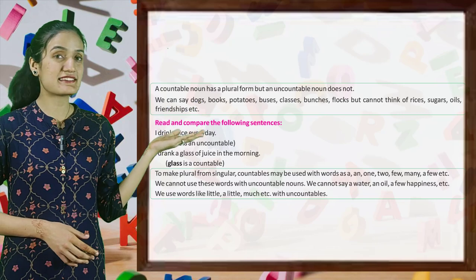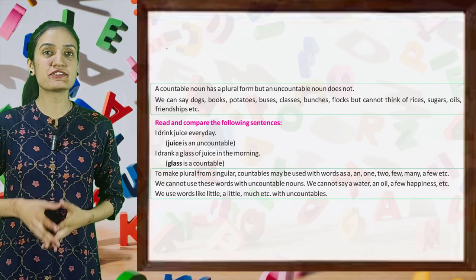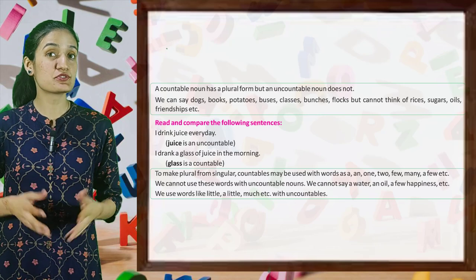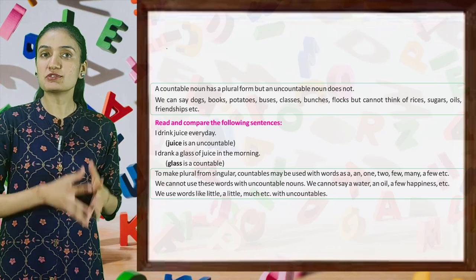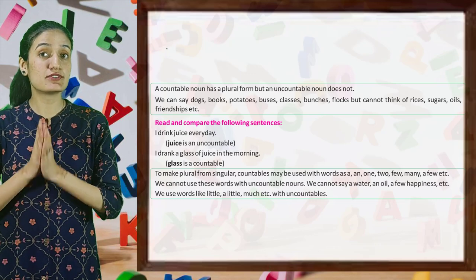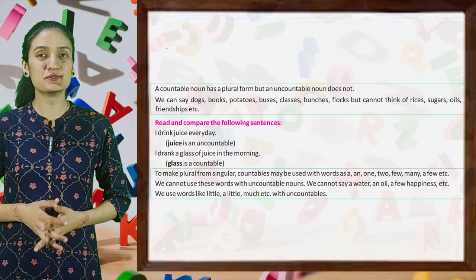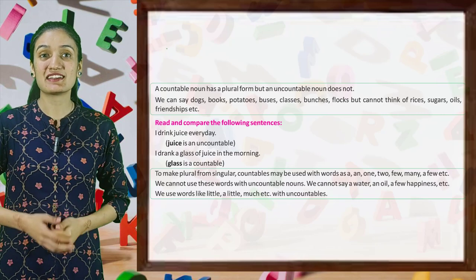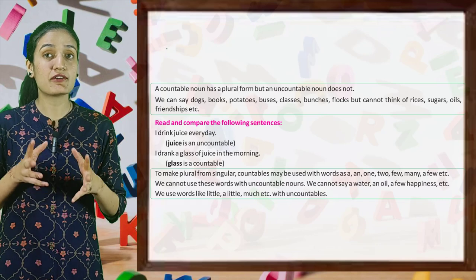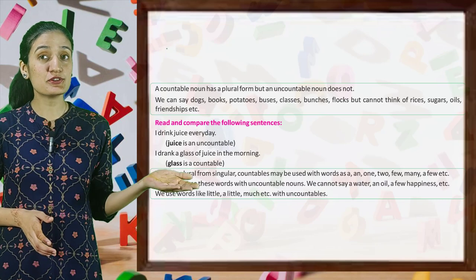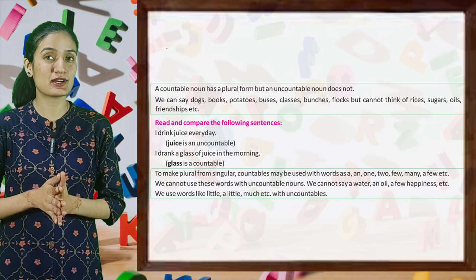Now let's read and compare the following sentences. I drink juice every day — juice is uncountable. I drank a glass of juice in the morning — glass is countable. To make plural from singular, countable nouns may be used with words like a, an, one, two, few, many, a few, etc. We cannot use these words with uncountable nouns — we cannot say a water, an oil, a few happiness, etc. We use words like little, a little, much, etc. with uncountable nouns.